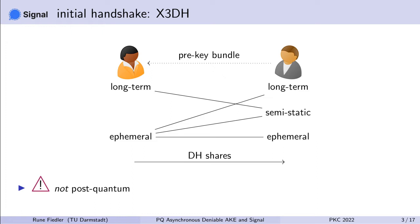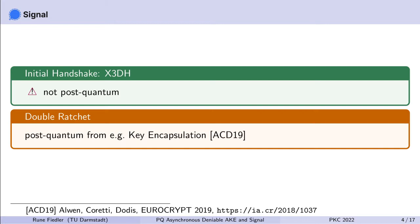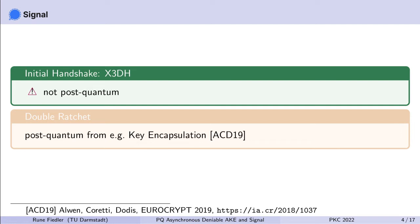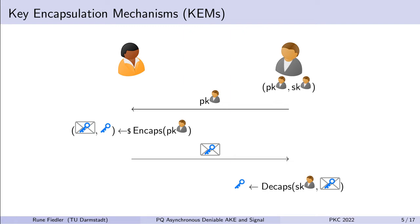This protocol is not post-quantum, because it relies on the Diffie-Hellman assumption, which does not hold against quantum adversaries. Signal consists of two protocols: first the initial handshake, Extended Triple Diffie-Hellman, which is not post-quantum; and then the Double Ratchet protocol, which can be replaced with a post-quantum alternative using key encapsulation mechanisms, as shown by Alwen et al. at EuroCrypt 2019. In this talk, we will focus on replacing the initial handshake with a quantum-secure version.